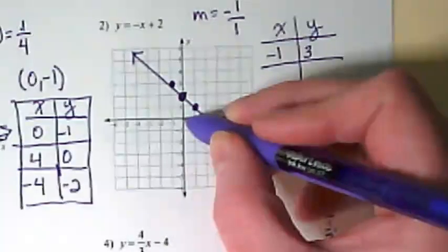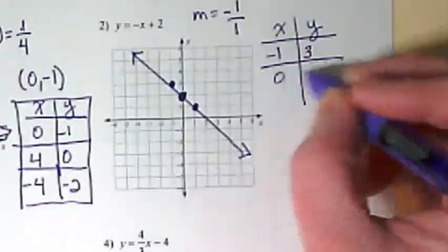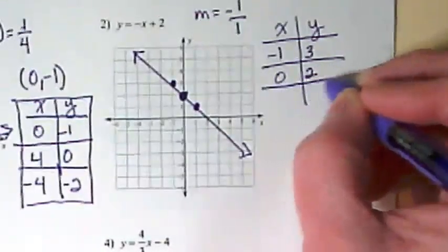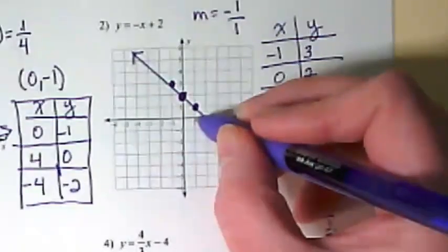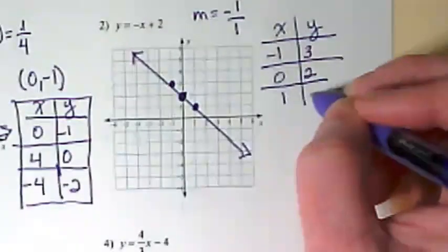The point we started with went 0, 2. And then the lowest point we graphed is 1, 1.